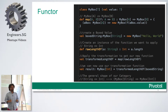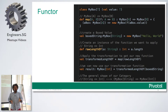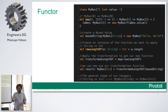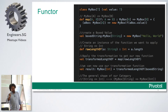The map method takes as its first parameter a function, and returns another function. The function that it returns is: MyBox of A as input and MyBox of B as output. The implementation actually applies the function that was passed into the map method to the value inside the first parameter. The thing inside the box is getting transformed.